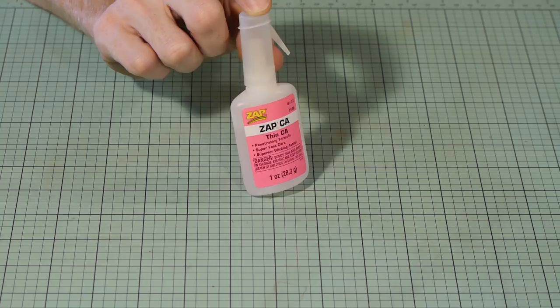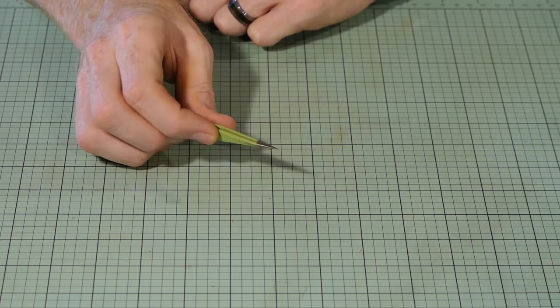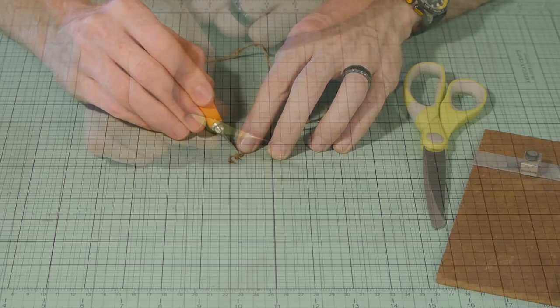To glue the bale together, CA glue works well, but any fast drying glue should work. You'll also want to grab a pair of tweezers as this will help get the hay bale started. You'll see what I mean shortly.